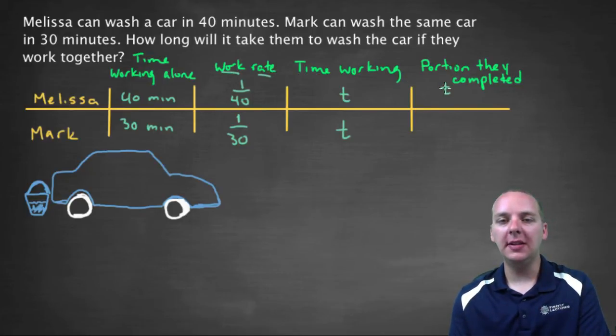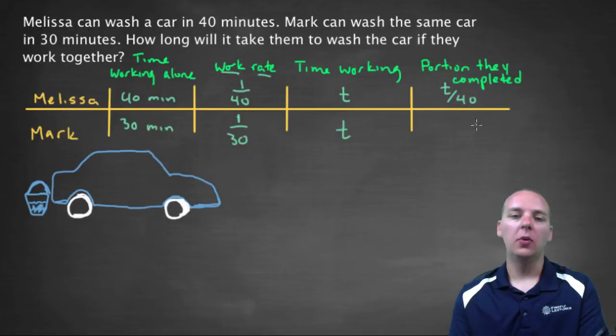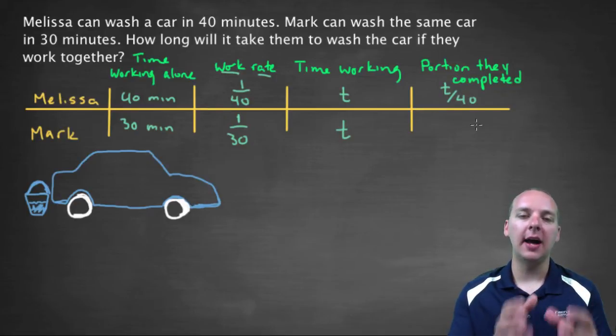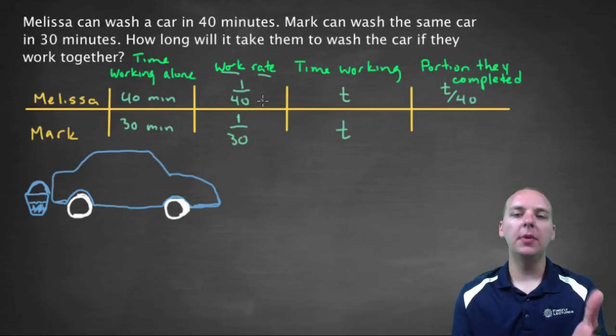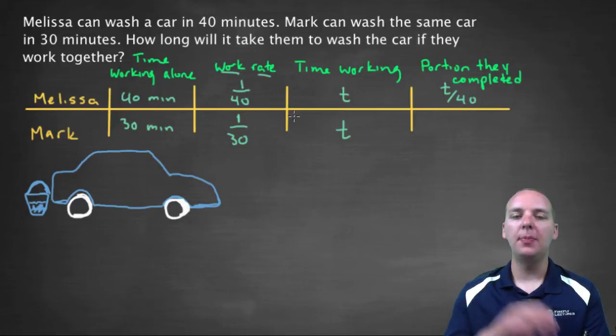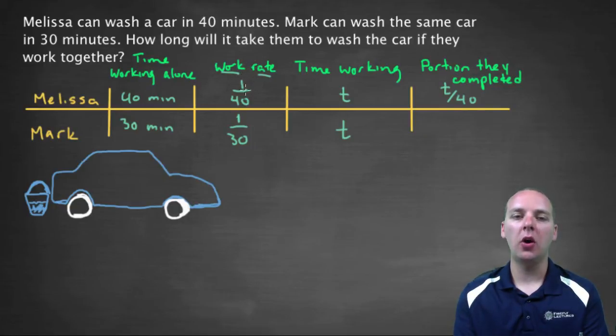So this would be T over 40, where that's coming from T times 1 over 40. Let me clarify, in case that's unclear why that works. Let's say hypothetically, let's forget Mark for a minute. Let's say Melissa's work rate is 1 over 40. One task, one car washed in 40 minutes. Let's say Melissa works for 20 minutes.